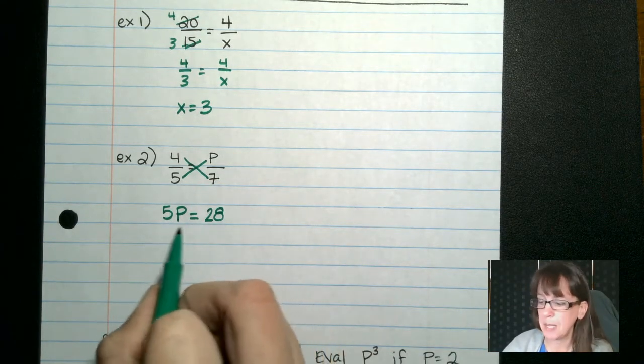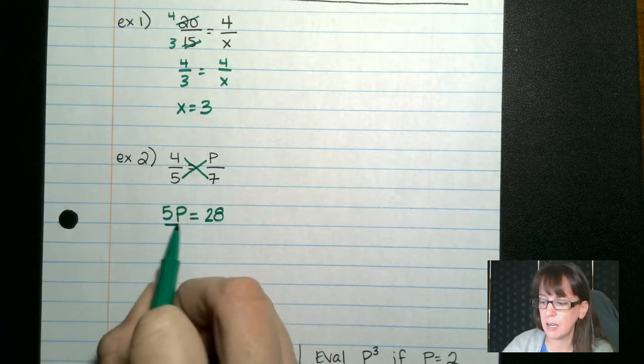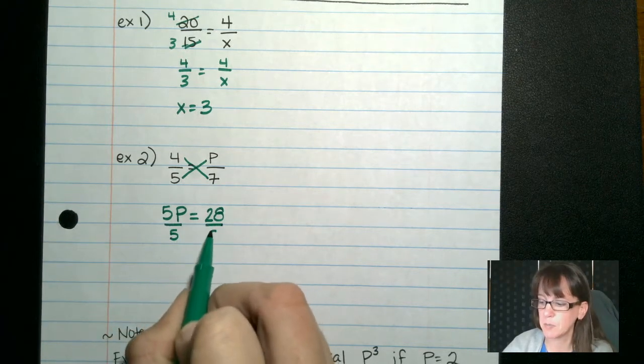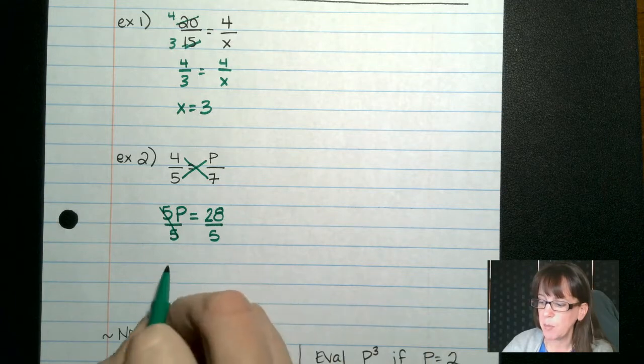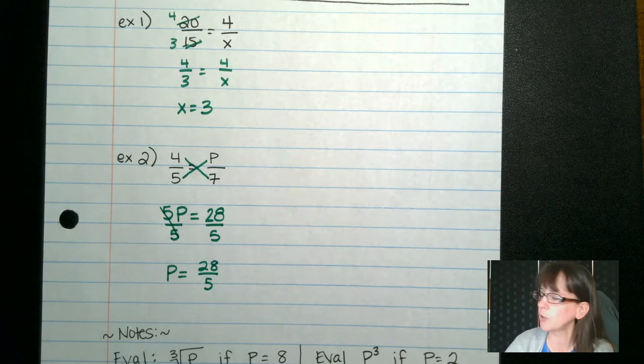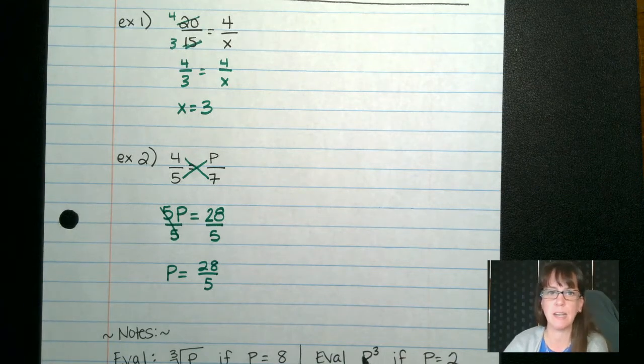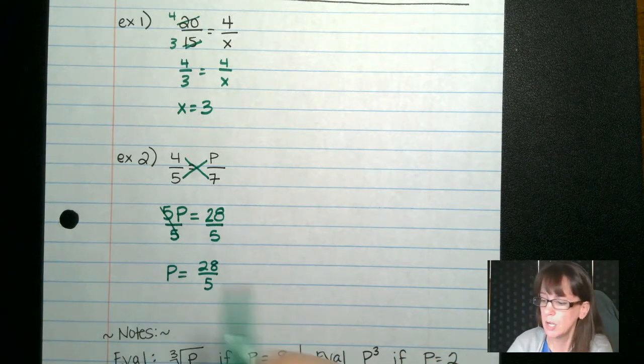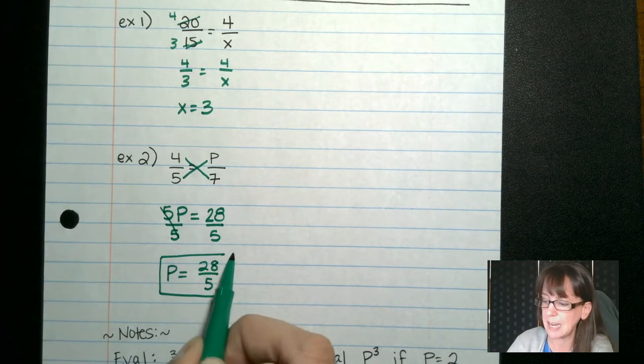Then to get p by itself, we're currently multiplying, and the opposite of multiply is to divide. So we divide both sides, and we end up with p equals 28 over 5. Now, at this point, can we reduce it any further? Nope, we cannot. 5 does not go into 28. So we leave it just like that, and that is our answer.